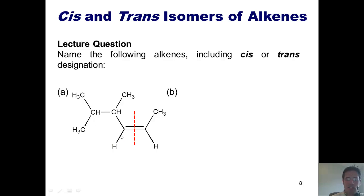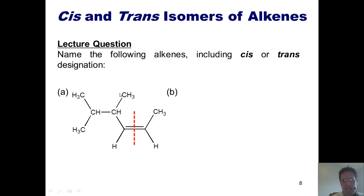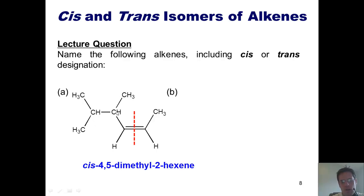If the hydrogens are on the same side, it is a cis-alkene; if on opposite sides, it's a trans-alkene. In this particular example, this turns out to be a cis-hexene — specifically, 4,5-dimethyl-cis-2-hexene.